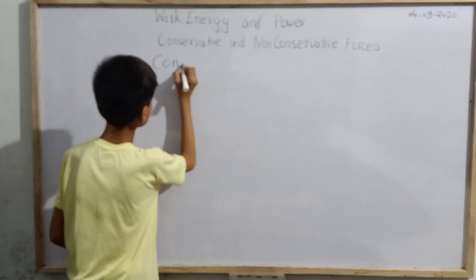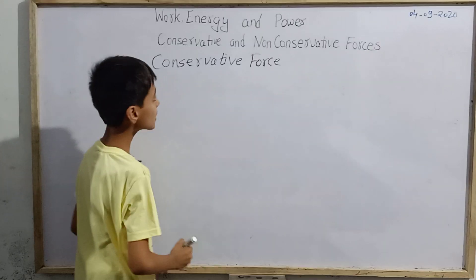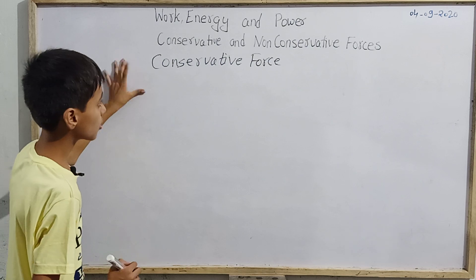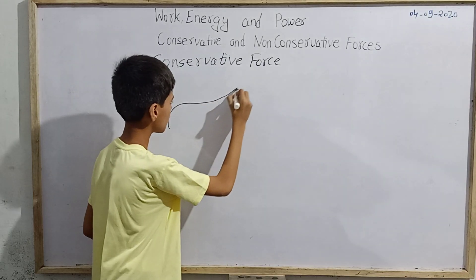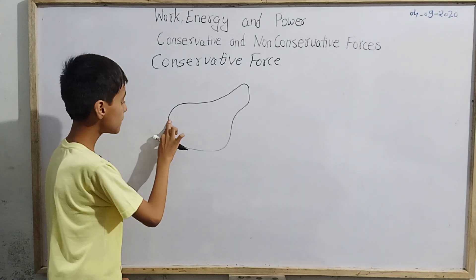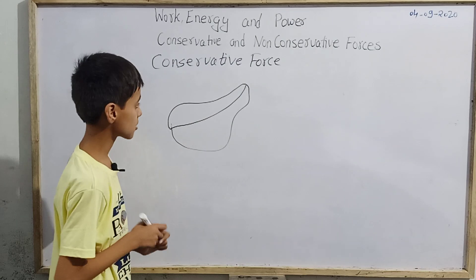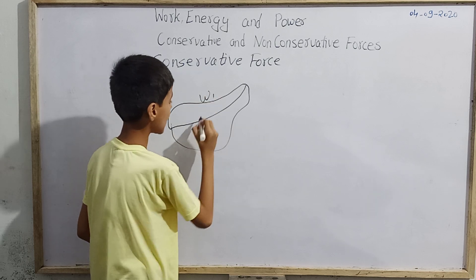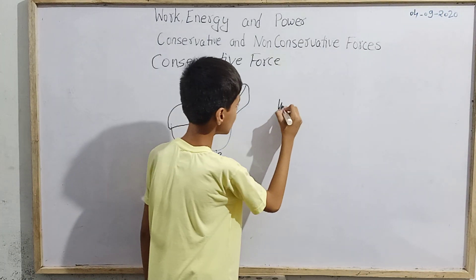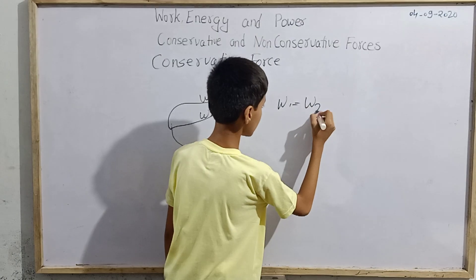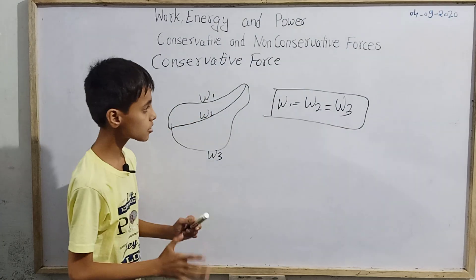Let us start with conservative force. The question is: what is a conservative force? To explain this, let me draw a diagram. Imagine we have a diagram with different paths. Along those paths, some work is happening — W1 happens along path one, W2 along path two, and W3 along path three. Now if work done along path one equals work done along path two equals work done along path three, that is W1 = W2 = W3...